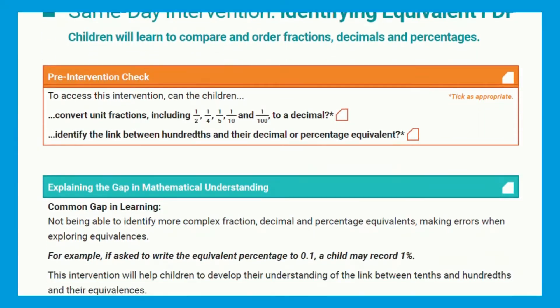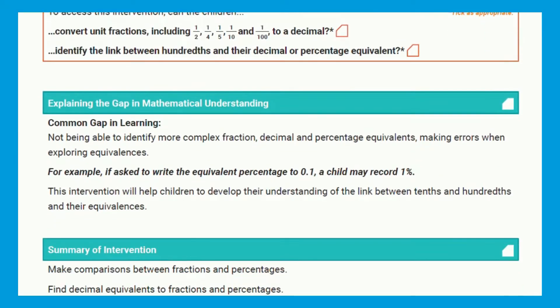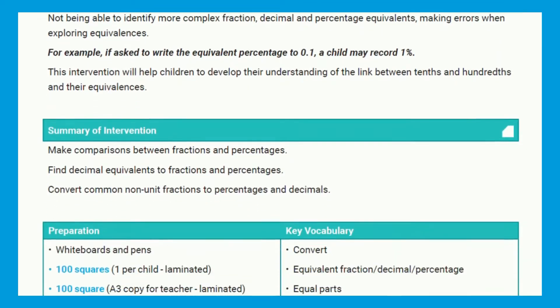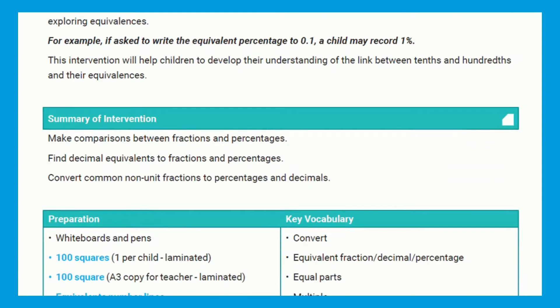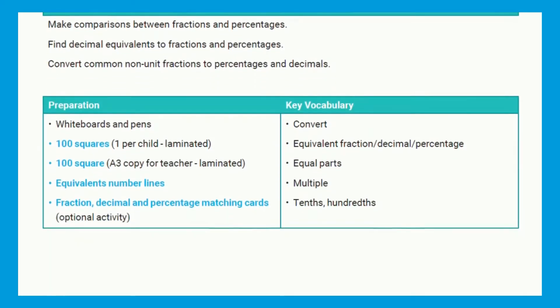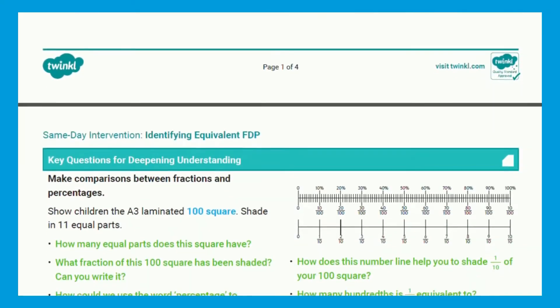A good place to start is with the intervention document. This document includes an example of a gap a child may encounter, a summary of what the intervention covers, a handy equipment list and guidance how to bridge the gap which can be found in black text.